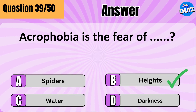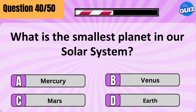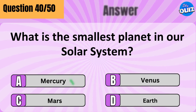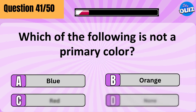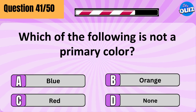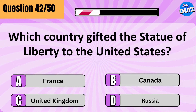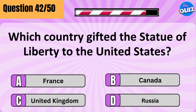Acrophobia is the fear of heights. What is the smallest planet in our solar system? Mercury. Which of the following is not a primary color? Orange. Which country gifted the Statue of Liberty to the United States? France.